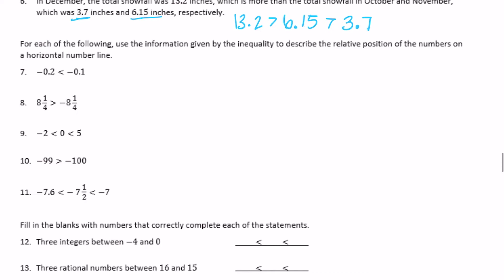For each of the following, use the information given by the inequality to describe the relative position of the numbers on a horizontal number line. Negative two tenths is less than negative one tenth. So on a number line, negative two tenths would be to the left of negative one tenth. Or you could say negative one tenth is to the right of negative two tenths — they are the same thing.